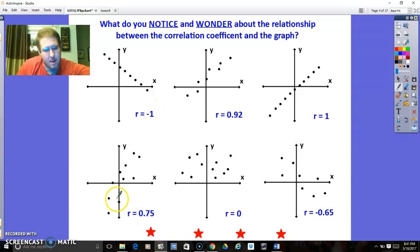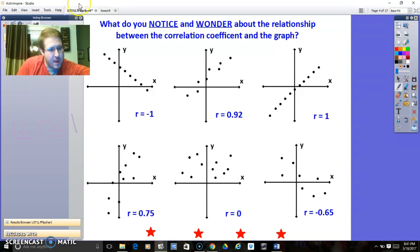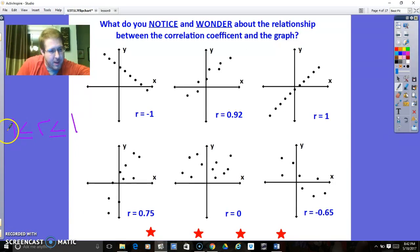Now, notice that all of these numbers are typically decimals, but they're all numbers where r is between, it's got to be less than or equal to one, but also greater than or equal to negative one. So negative one is the absolute lowest it could possibly be, and negative one is like this, meaning all of the data points in the scatter plot are in a straight line, which rarely ever happens.